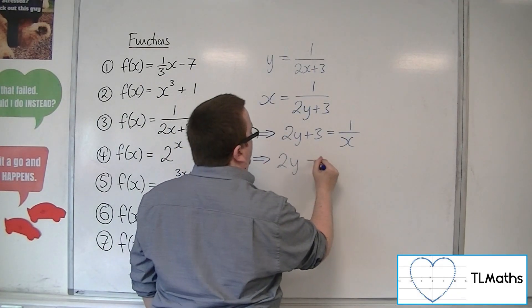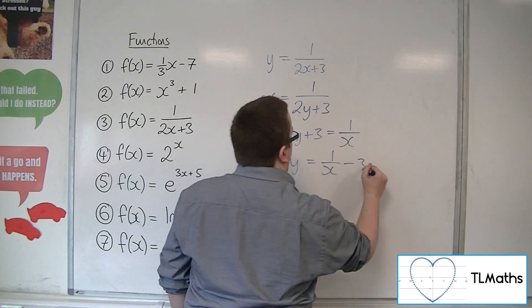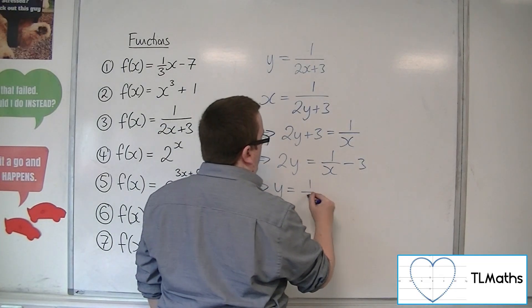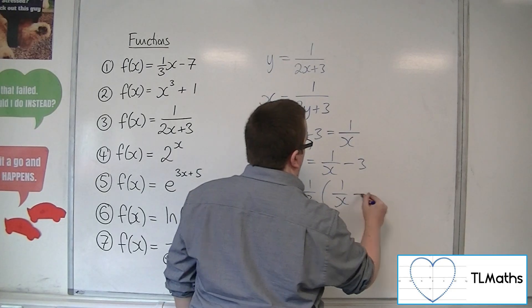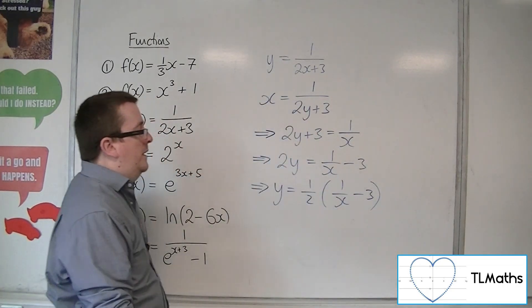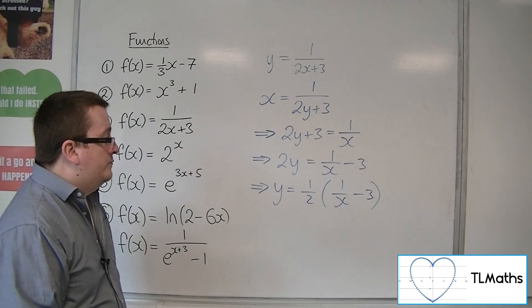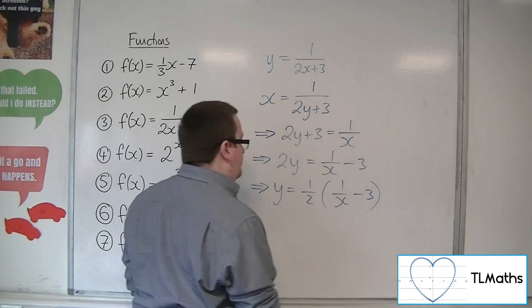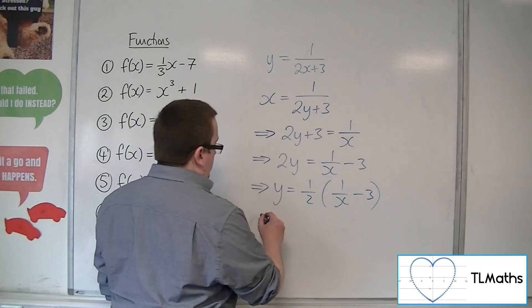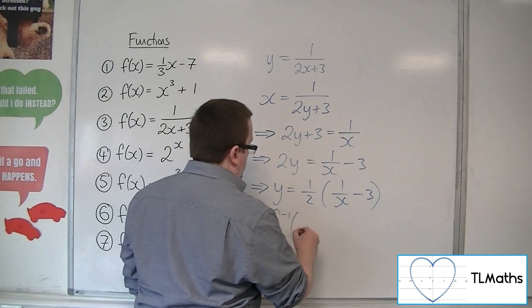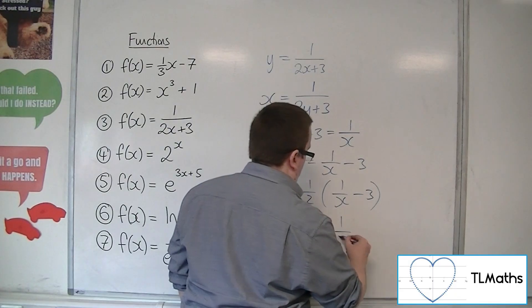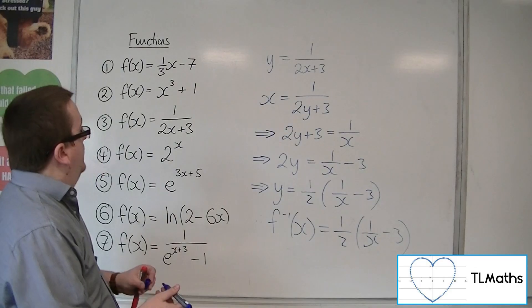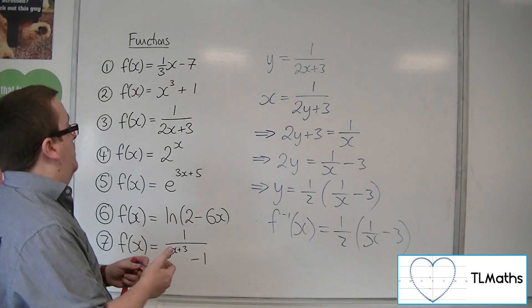Subtract the 3 from both sides, and then divide both sides by 2. Now you could write that as 1/2(1/x - 3), if you like, or 1/(2x) - 3/2, whichever you prefer. And then the inverse function is like that. That is number 3.